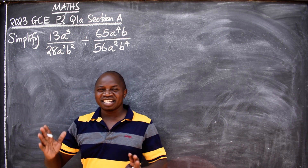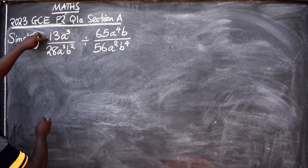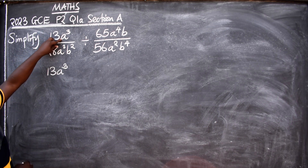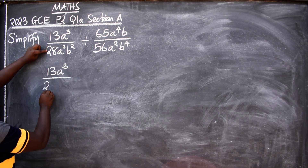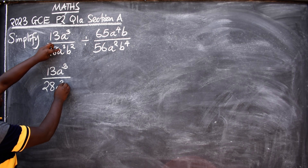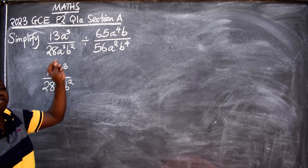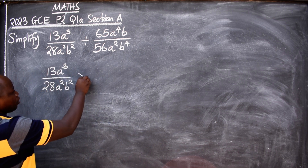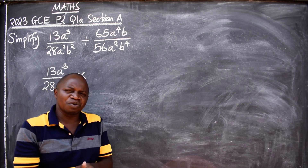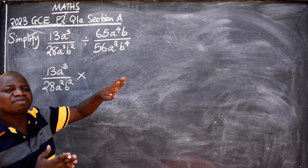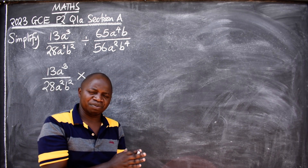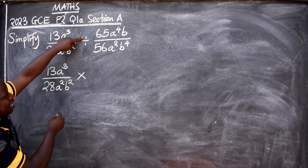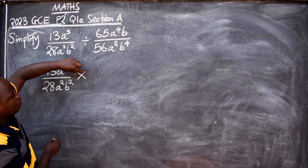Let's begin. We have 13a³ divided by 28a²b². Then we have this division symbol — what should you do? You change it to multiplication. And immediately when you do that, it means this second fraction has been affected — it has to change also. The denominator will become the numerator and the numerator will become the denominator.